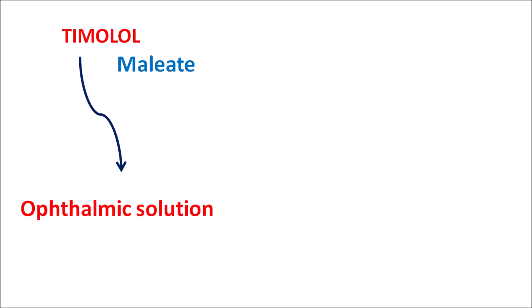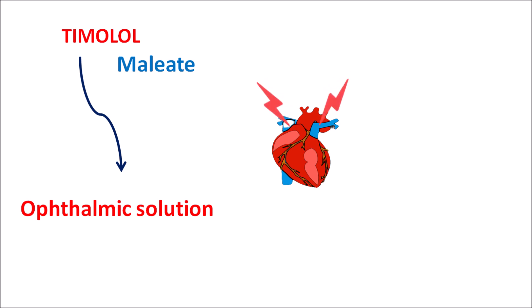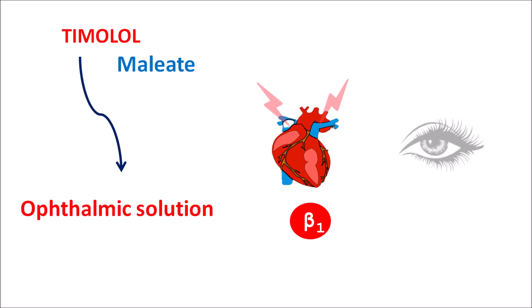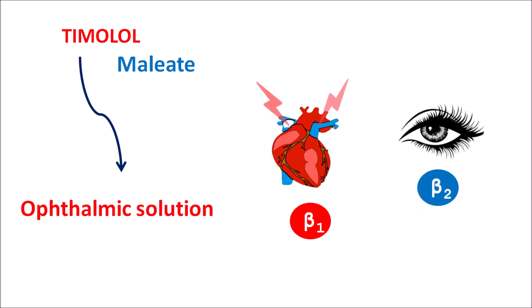Timolol can block both beta-1 adrenergic receptors as well as beta-2 adrenergic receptors. Normally the sympathetic system acts on the heart to produce cardiac contraction through beta-1 receptors, and it acts on various smooth muscles including the eye where beta-2 receptors are more important. Timolol maleate as an ophthalmic solution can still act on the heart and block the beta-1 receptors.